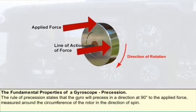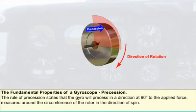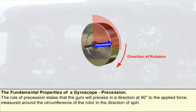Instead, the gyro moves in a plane at right angles to that of the torque, the resulting movement being called precession. The rule of precession states that the gyro will precess in a direction at 90 degrees to the applied force, measured around the circumference of the rotor in the direction of spin.